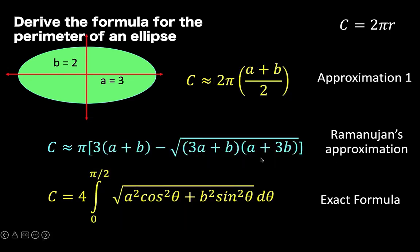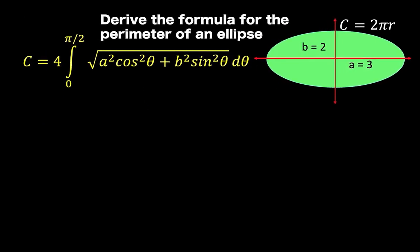During the time of Kepler, when he was studying planetary movement around the sun, this calculus formula was not yet available, so they were resorting to some approximation. So in this lesson, let's derive this formula for the perimeter of an ellipse.